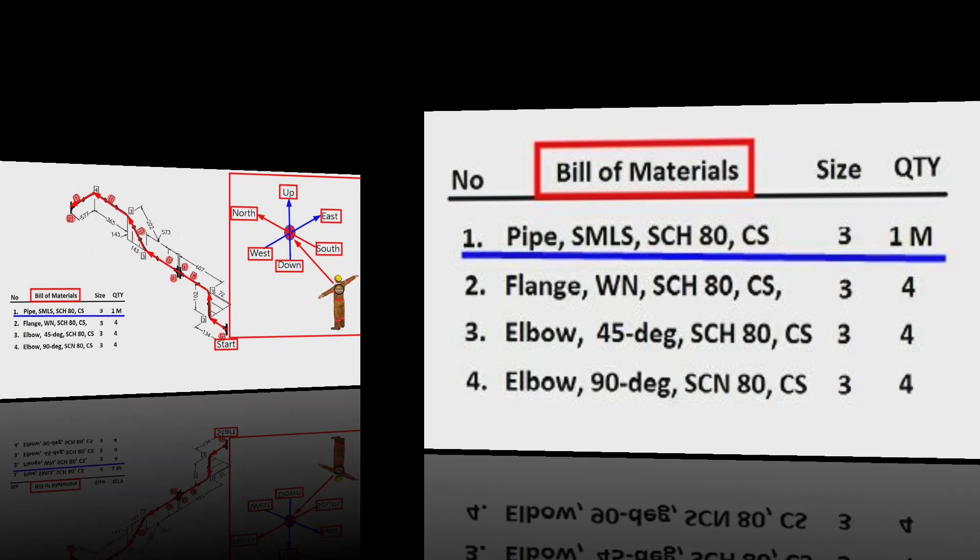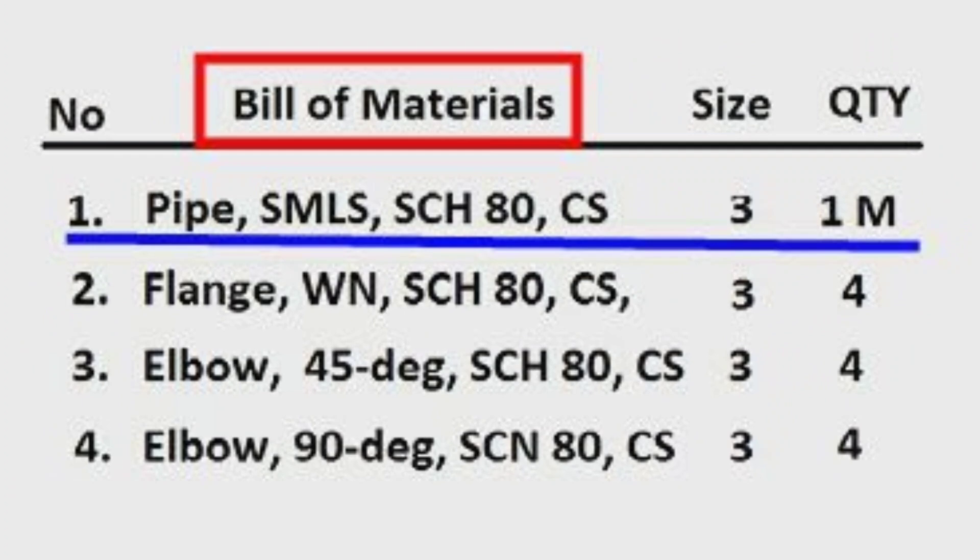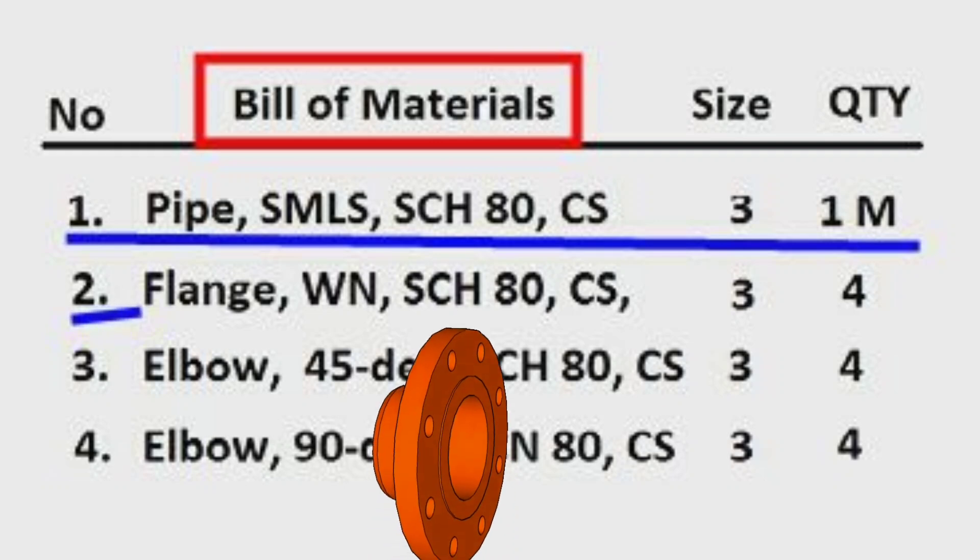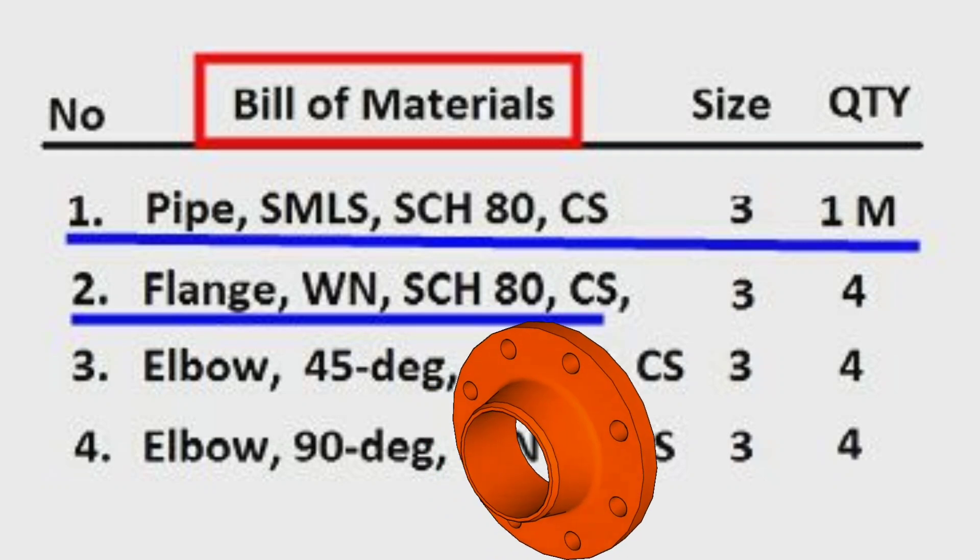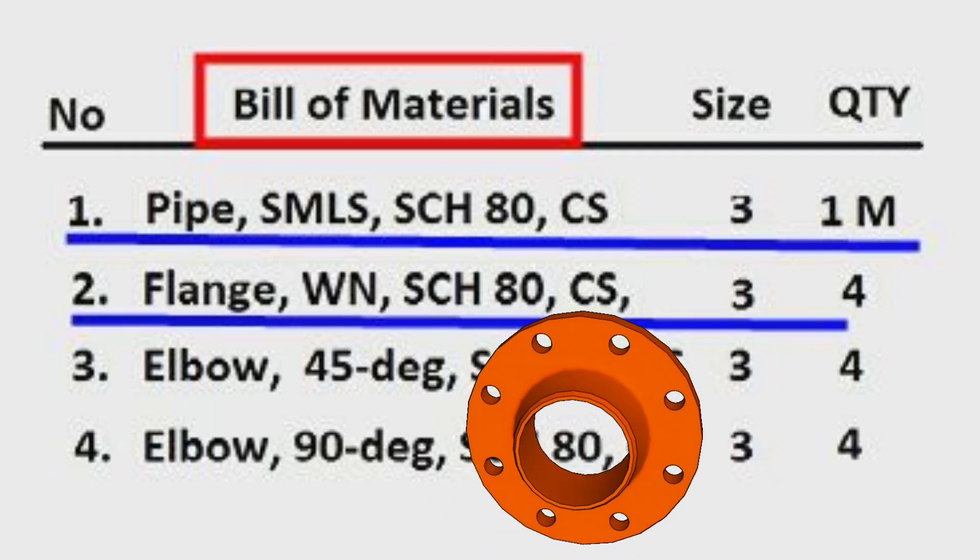Let's look at the material here. The detail number two, flange, weld neck type, wall thickness schedule 80, carbon steel material, size is 3 inches, the quantity is total 4 pieces.